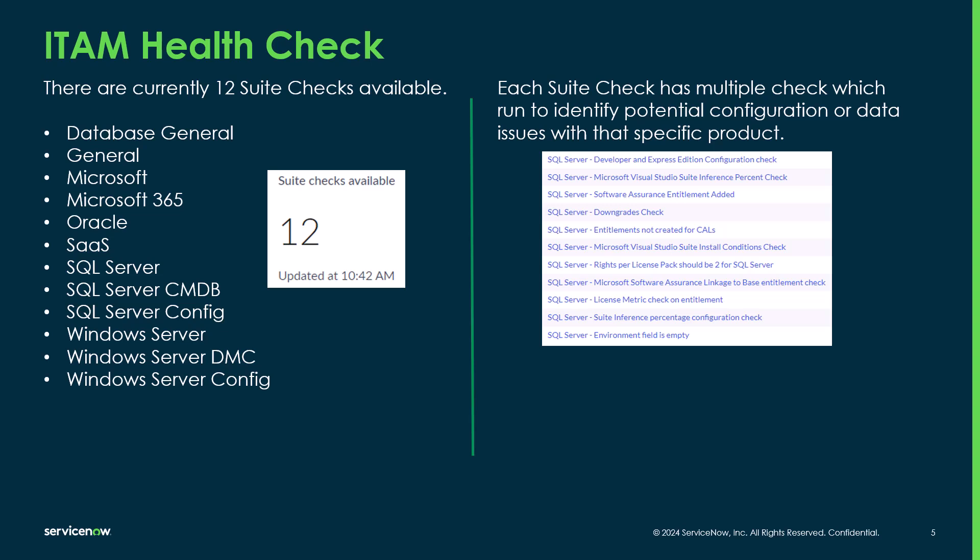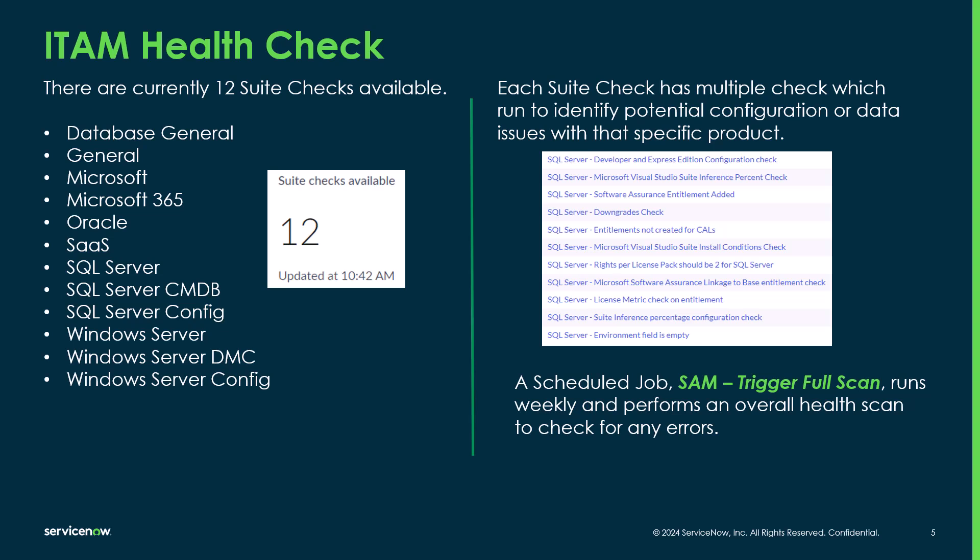Each suite check has multiple checks to run that identify configuration or data issues for that specific product. For SQL Server, for example, it checks software and software assurance, does downgrade checks, checks rights per pack, and checks the environment field, among others. The Health Check runs a scan every week triggered by a scheduled job called 'SAM trigger full scan,' but you can also initiate individual scans or full scans yourself at any given time.